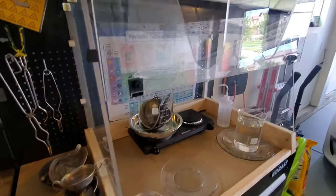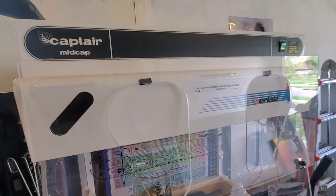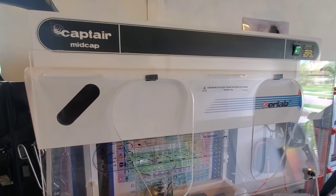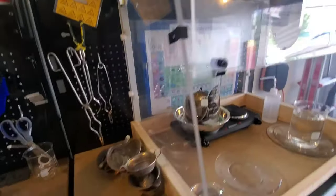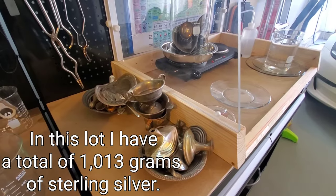A little bit of the setup here. This is all in a fume hood, extremely important as this does give off toxic gases. And then roughly the order that I plan to refine the silver in.